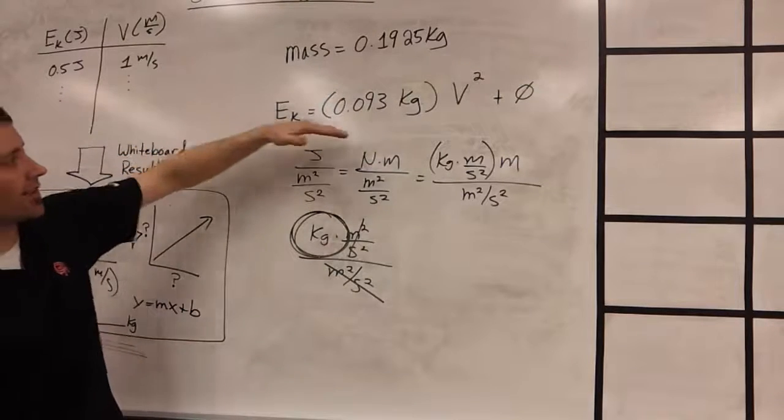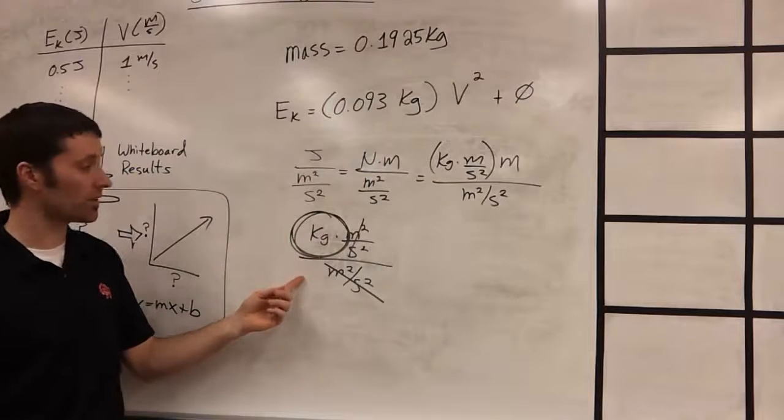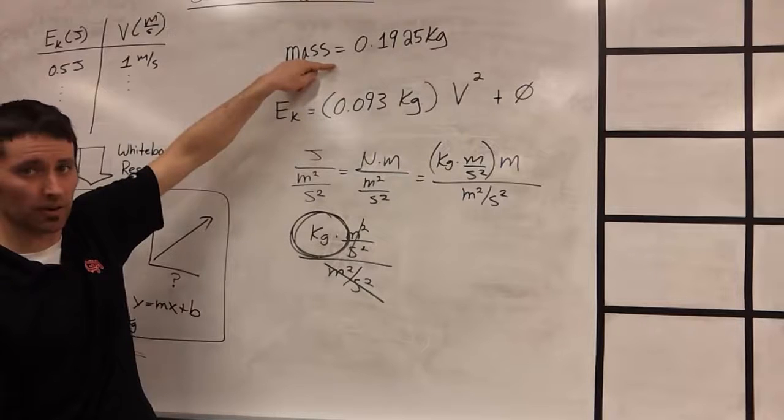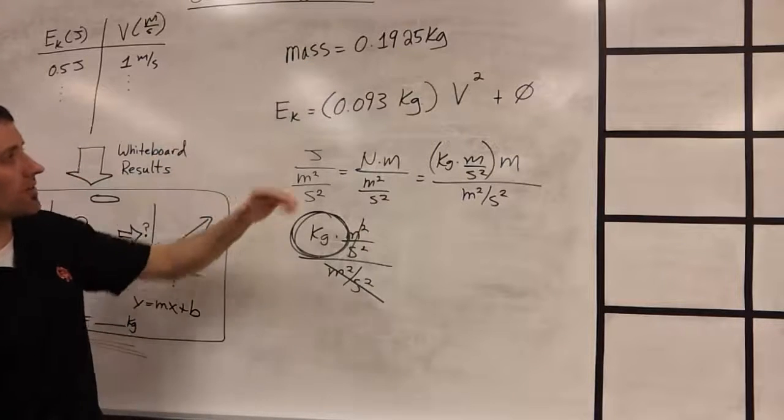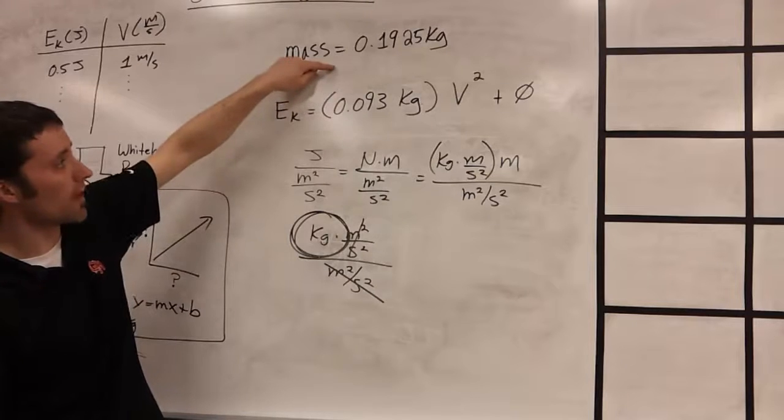And it looks like the slope, it must be a mass because, like we said, all of those units simplify to just kilograms. But it's not the mass of the car, but it might be related to the mass of the car. In class, we decided that the slope was approximately one half of the mass of the car.